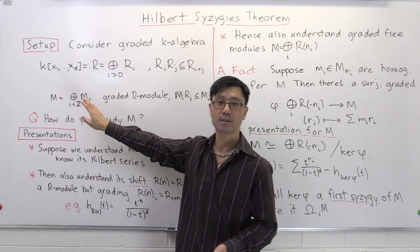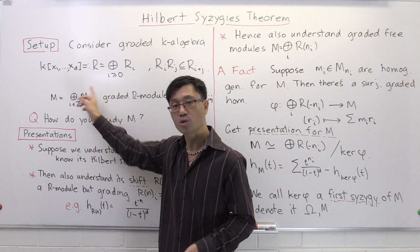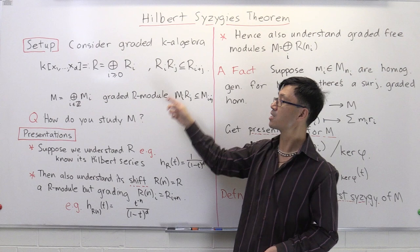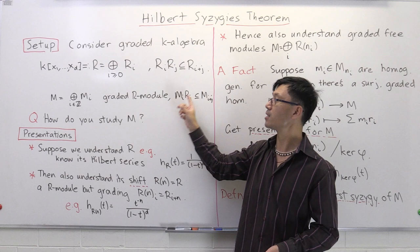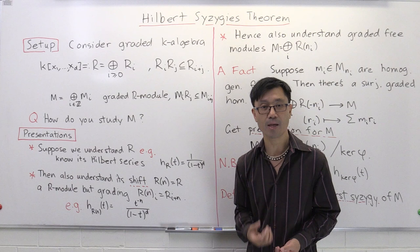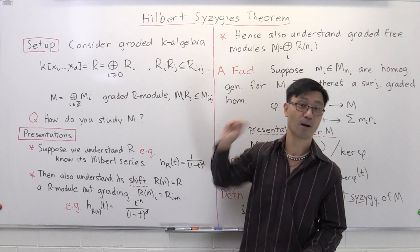What we want to study are graded R-modules. A graded R-module is an R-module with a direct sum decomposition M = ⊕ M_i, where the indices i range over all the integers, and it respects the decomposition in the sense that M_i · R_j lies inside M_{i+j}. The natural question is: how do you study this module M? I want to show you a general procedure for doing it and how Hilbert Syzygy's theorem comes into play.